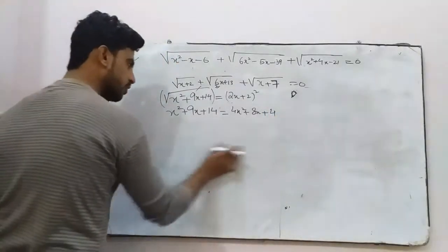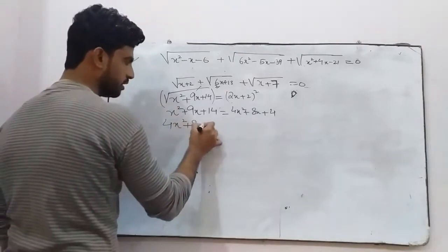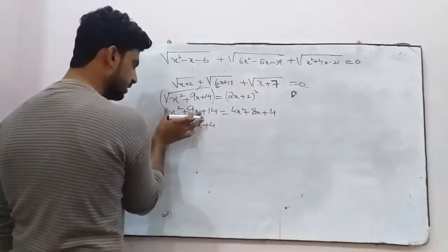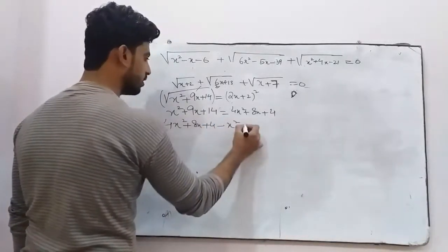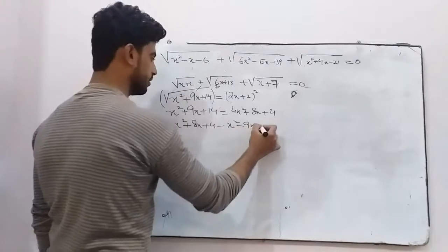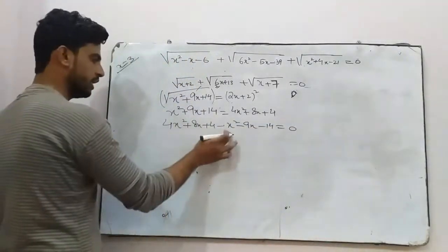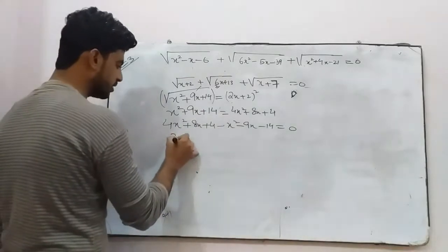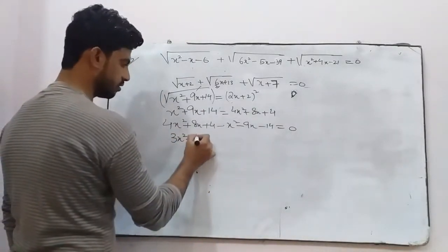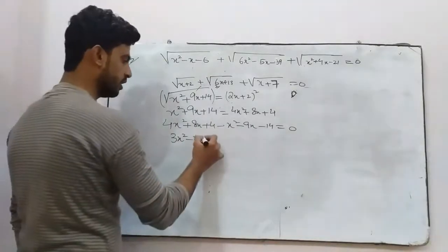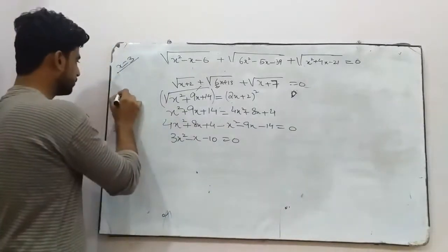Taking all terms to the other side: 4x² plus 8x plus 4 minus x² minus 9x minus 14 equals 0. Combining: 3x² minus x minus 10 equals 0.